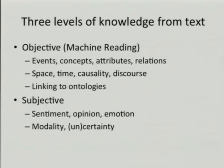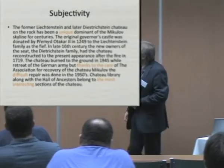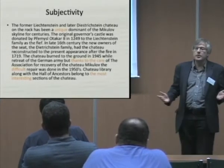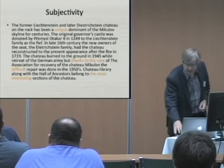The second level is subjective knowledge extraction from text, which means that we are interested in finding opinions, sentiments, emotions, opinion holders, what someone has an opinion about, etc. We also try to reason about modality and uncertainty. Now as you will see in this text there is not a lot of subjectivity. There are a few indications of an opinion but there is no modality at all, which is also normal for a factual text like a description.